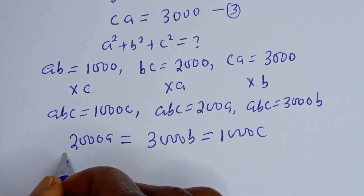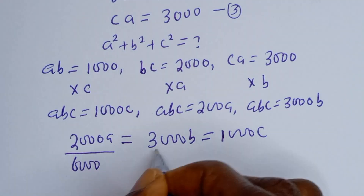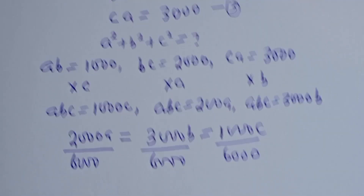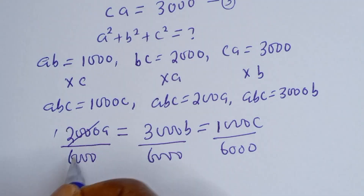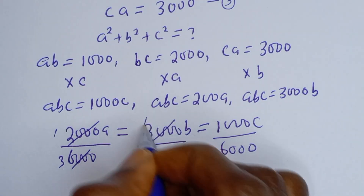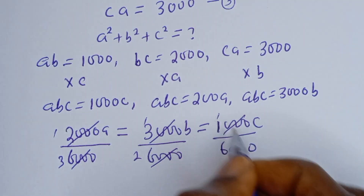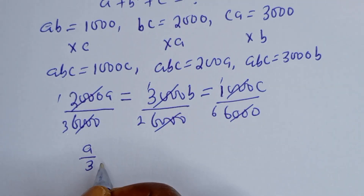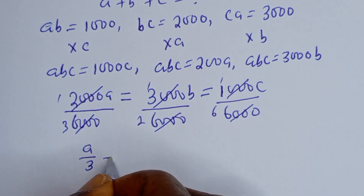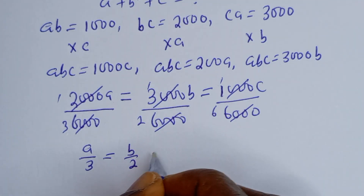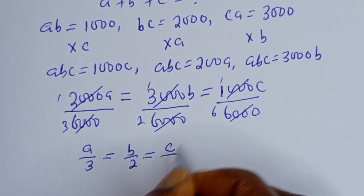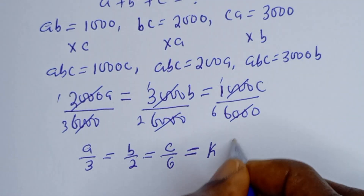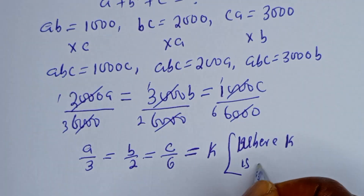The sum of these is 6000, so let's divide all through by 6000. Dividing each term: 2000A/6000 gives A/3, 3000B/6000 gives B/2, and 1000C/6000 gives C/6. So A over 3 is equal to B over 2, is equal to C over 6. Now let's call this equal to K, where K is a constant.